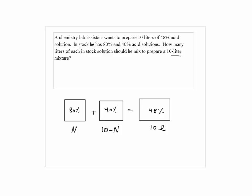So now we need to set up the equation. So here we have 80% times N plus 40% times 10 minus N is equal to 48% times 10. That's the formula we're going to use. 80% would be dividing 100 into 80, that would be 0.8N plus 0.4 times 10 minus N is equal to 0.48 times 10.